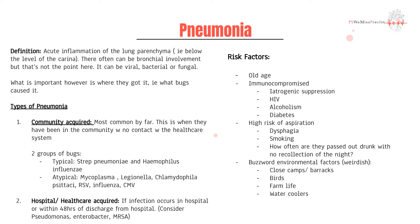It's really important to categorize pneumonia as either community acquired or hospital acquired for two reasons: you want to know what bug is causing it, and the treatment will also be very different, as hospital-acquired bugs may have antibiotic resistance. For community acquired pneumonia, the two broad classes are typical bugs — Strep pneumoniae and Haemophilus influenzae — and atypicals including Mycoplasma, Legionella, Chlamydia psittaci, and viruses like RSV, influenza, CMV, and COVID.